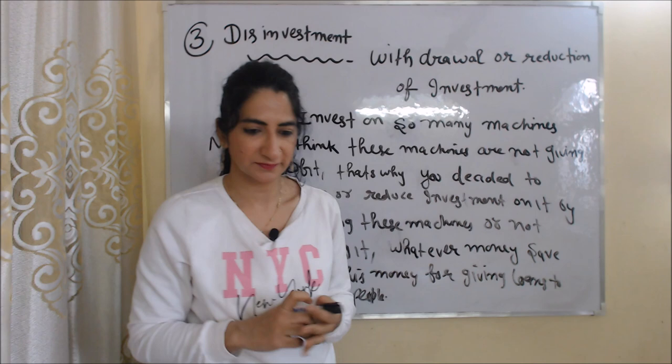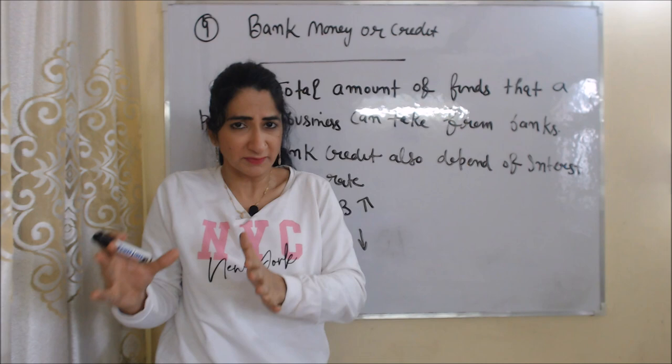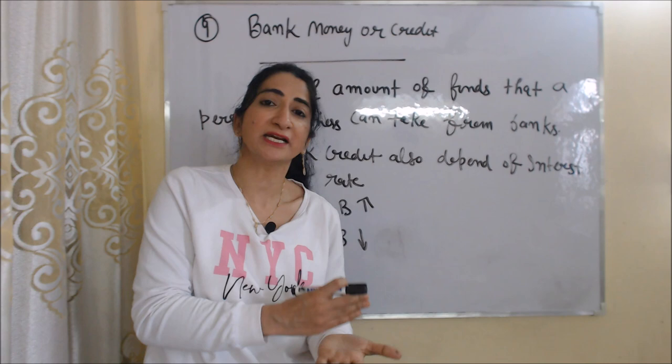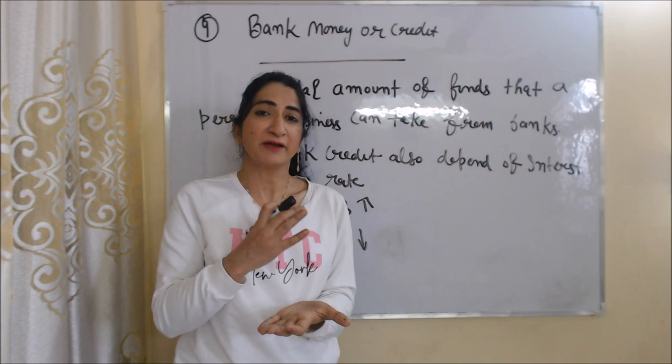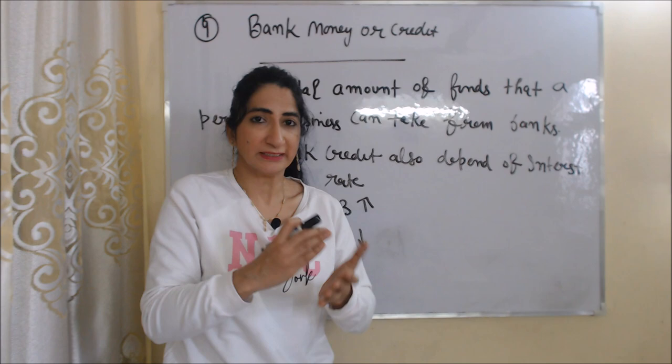The next factor is bank money or credit. Bank credit means the total amount of funds that a person or business can take from banks. Bank credit also depends on interest rate. If interest rate is high, banks want to give more loans to people. On the other hand, if interest rate is very low, banks want to give very less loans to people.